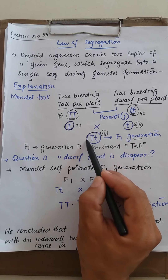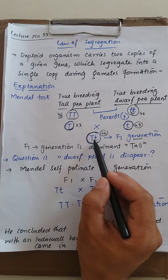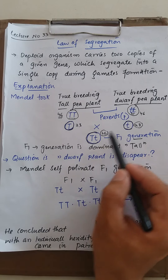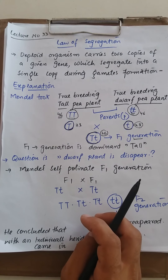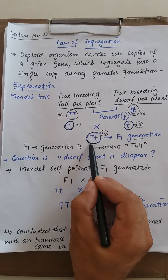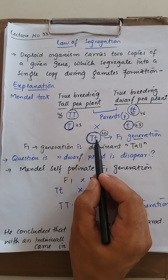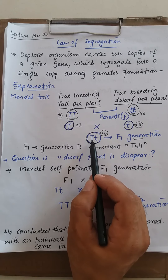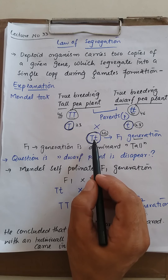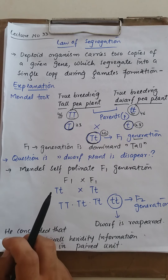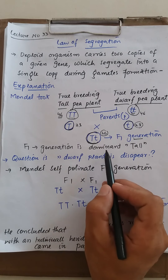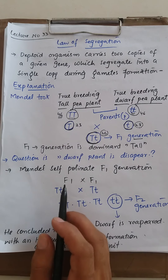The F1 generation is basically a blend of characteristics, having capital T as well as small t. So the F1 generation offspring are having both characteristics — they are having short and tall as well. But according to the law of dominance, the F1 generation should be dominant — meaning all of the F1 generation will be tall. So the F1 generation is dominant: tall.